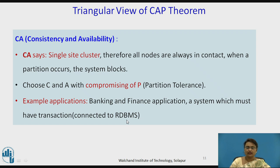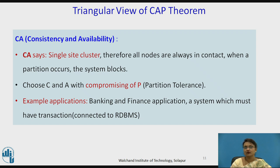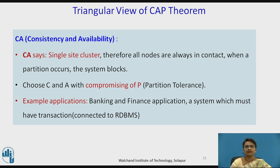Let us see each combination one by one. Since all three are not possible, how can two be combined? Talking about CA — Consistency and Availability — it means a single-site cluster where all nodes are always in contact; when a partition occurs it compromises partition tolerance but works for consistency and availability. Examples of CA applications include banking and finance applications, and systems with transactions connected to RDBMS.